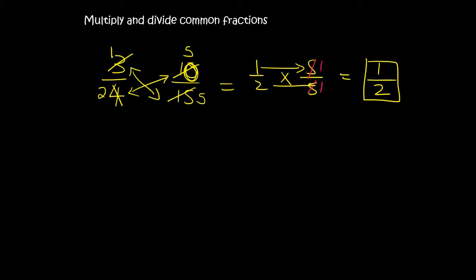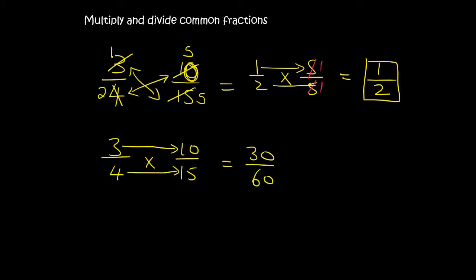If you didn't do any canceling, you'd have 3 over 4 times 10 over 15. Multiplying across gives 30 over 60, and then 30 goes into itself once and into 60 twice, giving 1 over 2. You don't have to cancel, but trust me it is way better to cancel — later on we'll deal with bigger numbers and it gets very complicated if you don't cancel first.